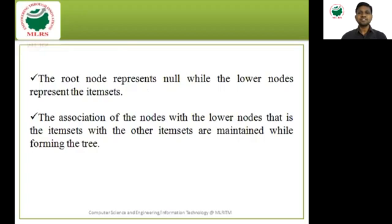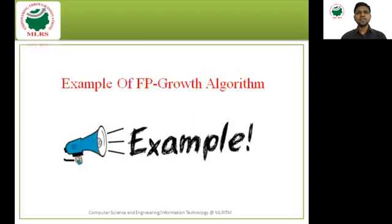The root node represents null — just like any tree, the initial node is null. The lower nodes represent the itemsets. The association of nodes with lower nodes — that is, itemsets with other itemsets — is maintained while forming the tree structure. In the FP Tree we need to concentrate on the root node as well as the lower nodes representing itemsets. Now I want to take one example of the FP Growth algorithm so you will get a clear idea about how to find frequent itemsets using FP Growth.